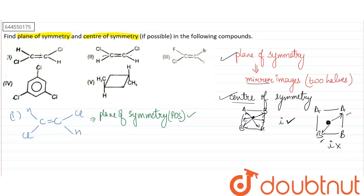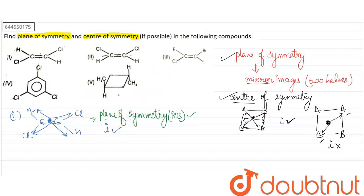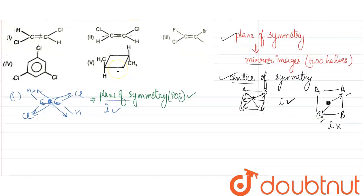Now for the center of symmetry: this is the center. We go this side — we have Cl; we go the other side — we have Cl. We go this side — we have C; the other side — C. We go down — we have H; we go up — we have H. So center of symmetry is present. So both plane of symmetry and center of symmetry are present in compound one.